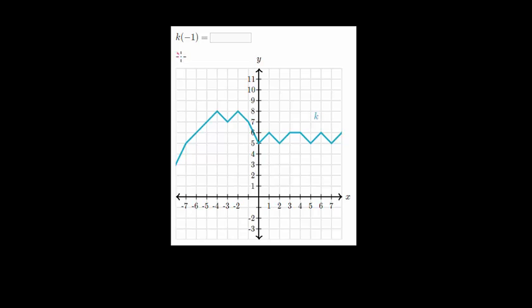When we see k(−1), that just means that x is minus 1, and we need to find y. So we find an x value of minus 1 right here, and we go all the way up to our curve. It looks like it intersects at this point right here.